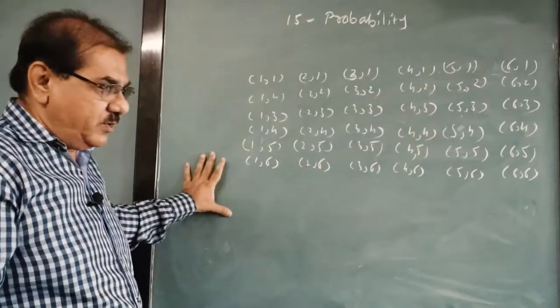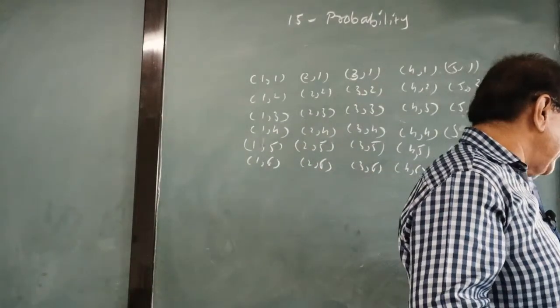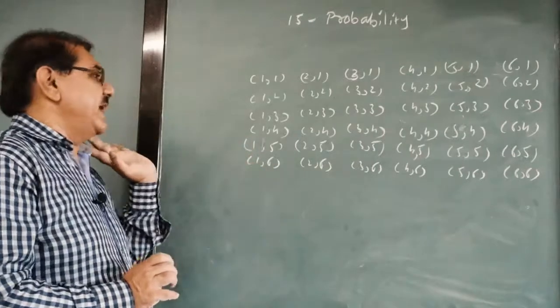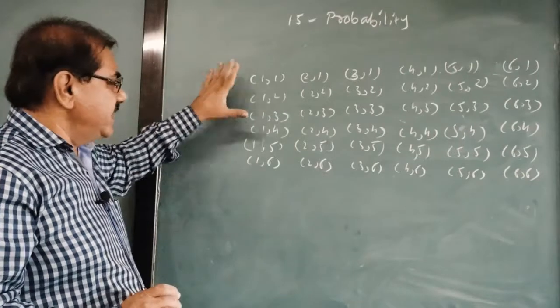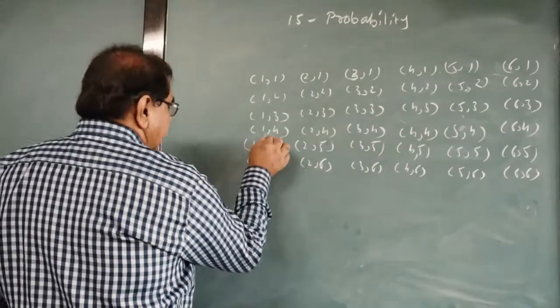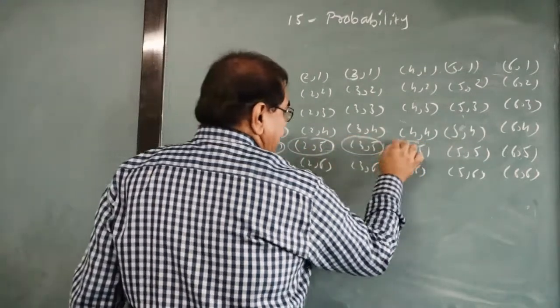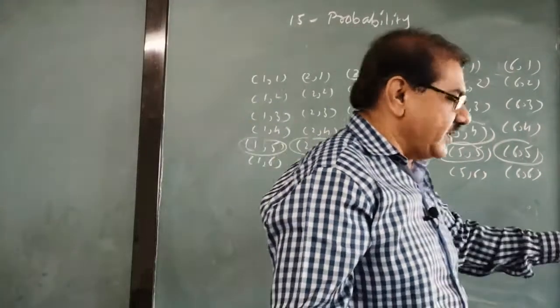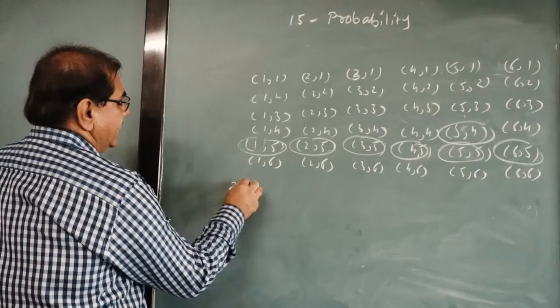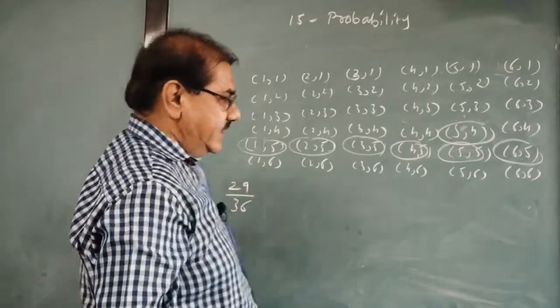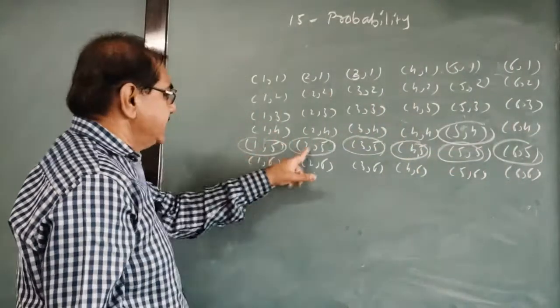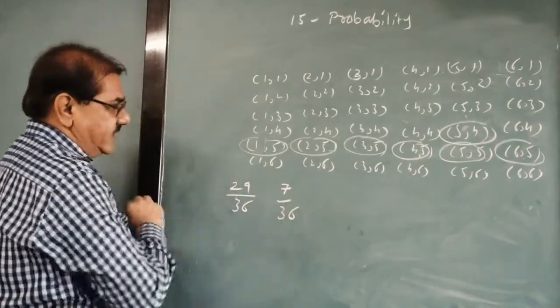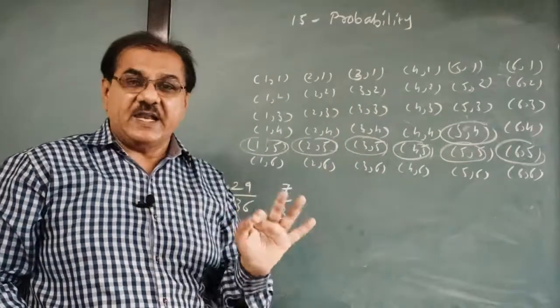Now out of this 36 outcomes, we have to find the result. What is the probability that 5 will not come either time? Out of the two times, neither time the 5 appears. Means we have to find out the outcomes which are not carrying 5 at all. So you can check, I just cancel these events, these outcomes which carry 5. See, these are the 7 that don't carry 5. So out of 36, you cancel 7, it will be 29 upon 36. And 5 will come up at least once, so these are the numbers in which 5 comes at least once. So it is 7, 7 upon 36. So this is how if we know how to find out all the outcomes, we can answer any questions very easily.